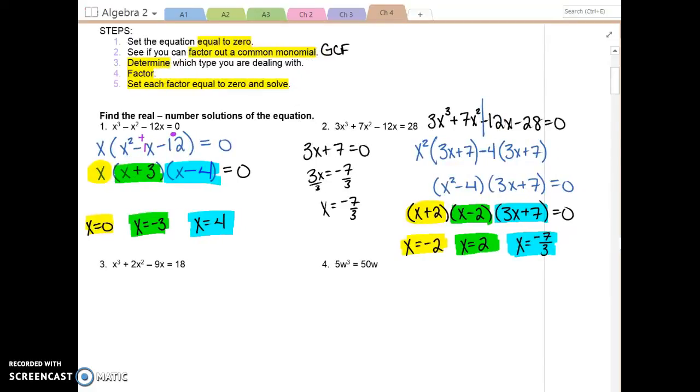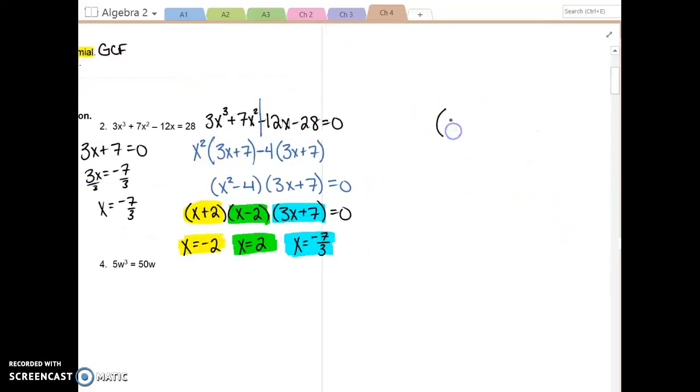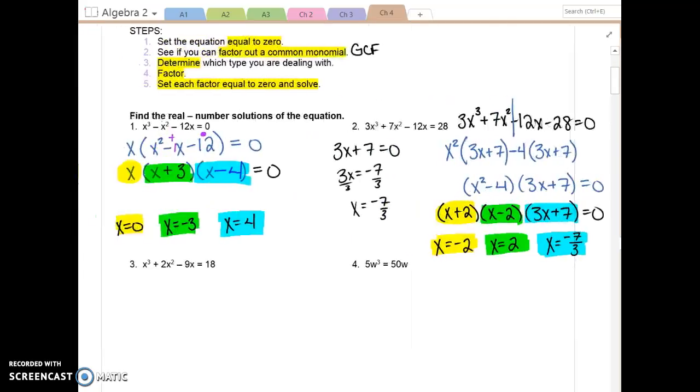You don't have to write this down, but let's say that one of the factors was 5x minus 2. What would your solution be? Positive 2 over 5. Let's say another set of parentheses said 9x plus 4. What would be the solution? Negative 4 over 9. Are you seeing the pattern? So now you don't have to do 9x plus 4 equals 0 and solve the equation. You can just do the opposite of the number divided by whatever is in front of the x. You don't have to write that. I just wanted to show you that because anything that you can do to save yourself time is going to be good.